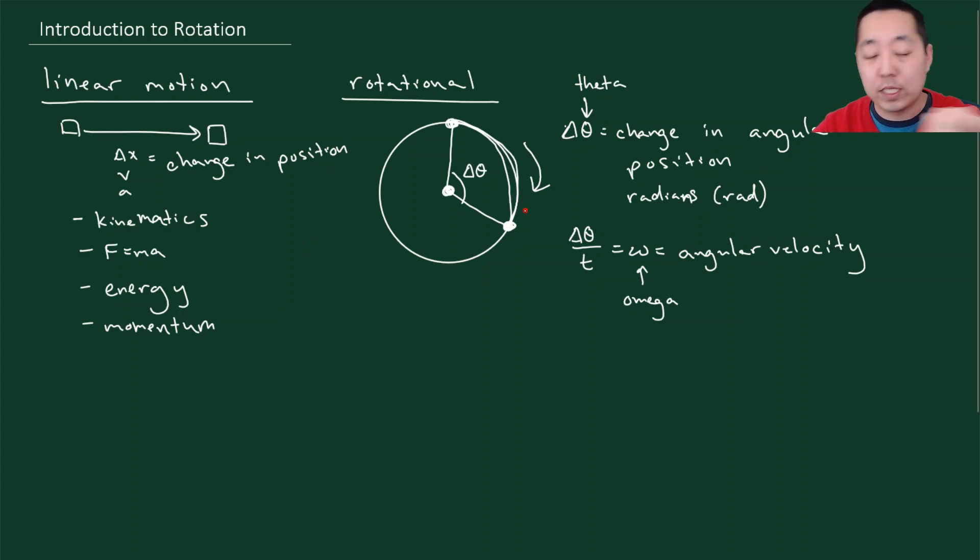So if it's spinning faster, like the same angle is being swept out in a shorter amount of time, or it's sweeping out more angles, more radians in a given amount of time, then we say it has a higher angular velocity.